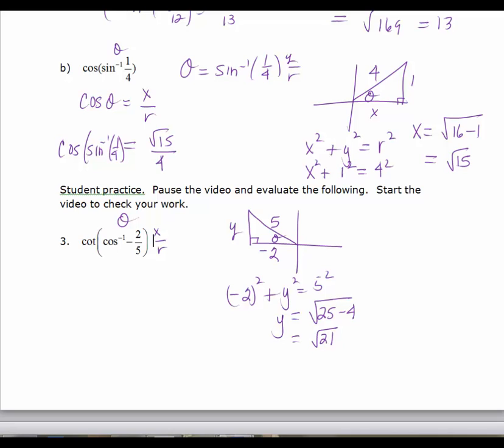So I know that the cotan of theta, since tan is y over x, the cotan is x over y. So the cotan of theta, or theta is the inverse cosine of negative 2 fifths.